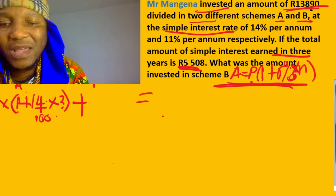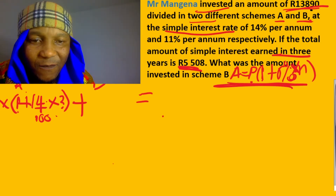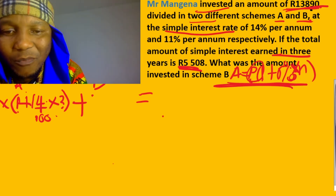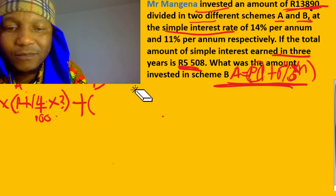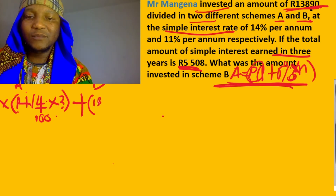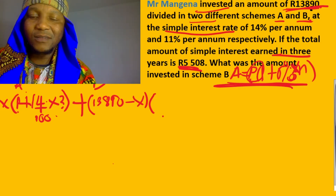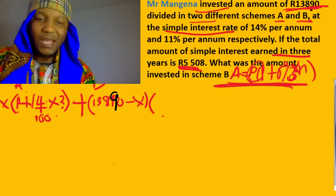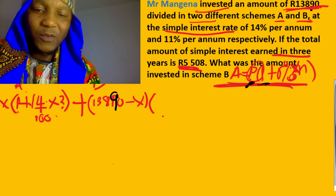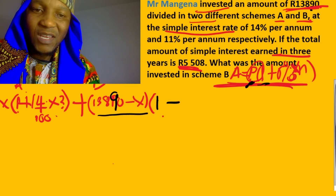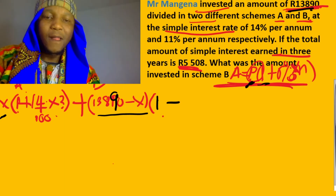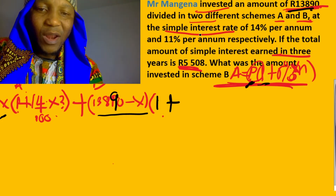For investment B, if I invested x in the first one, the second one is going to be the total amount minus x. So the principle for investment B is going to be 13,890 minus x. Then we apply the same formula: 1 plus the interest rate for the second scheme.